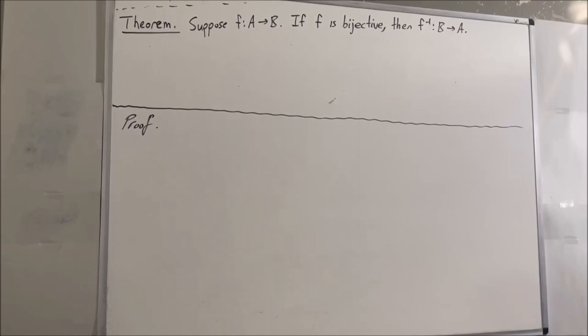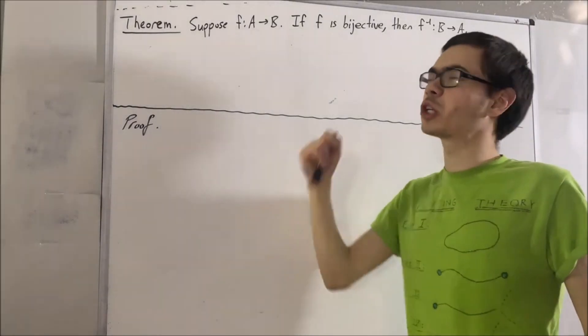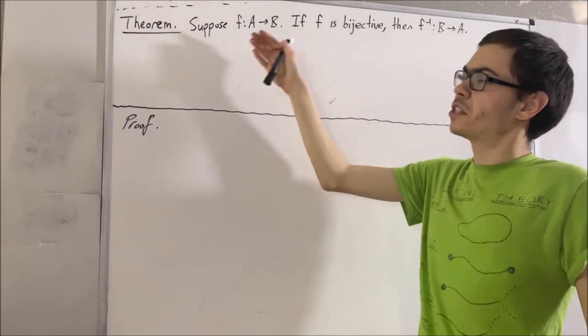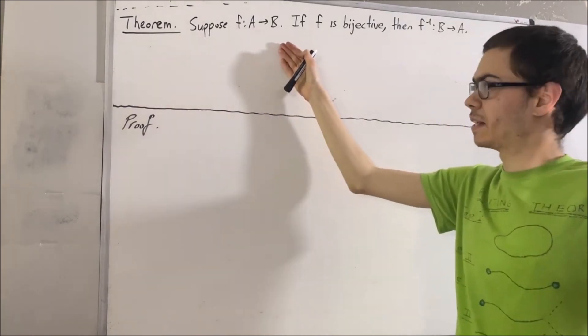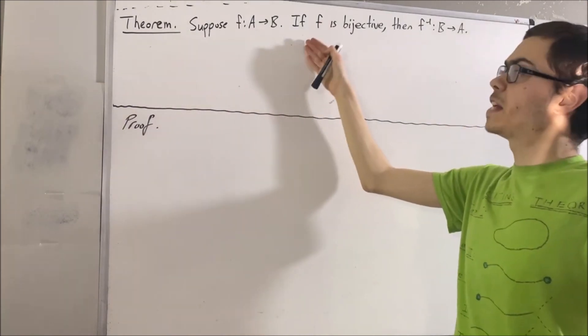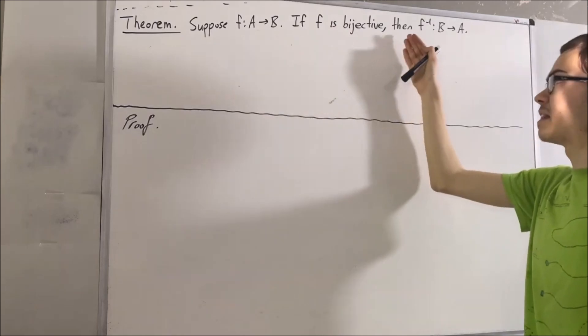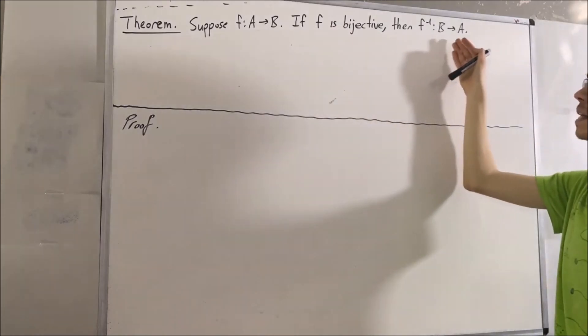Hello! In this video, we're going to prove the following theorem: suppose f is a function from A to B. If f is bijective, then the inverse of f is a function from B to A.